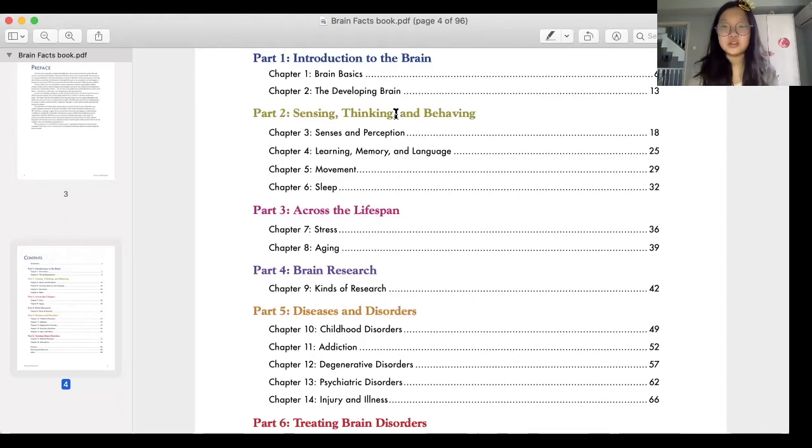Part three, Across the Lifespan. Here I don't really suggest you spend too much time on these because they won't actually get to this so detailed. You can just read over it once or twice and then take some notes. You don't have to pay attention too much on chapter 8 which is aging.